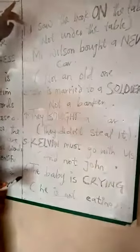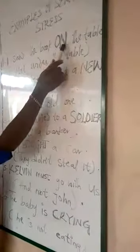Was the book under the table? No. Was it beside the table? No. But looking at this — on the table. The book was on the table. I saw the book on the table.